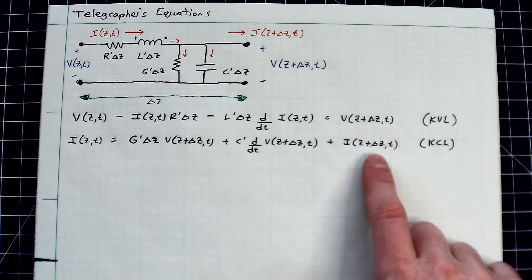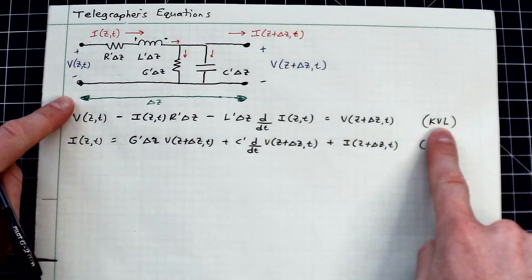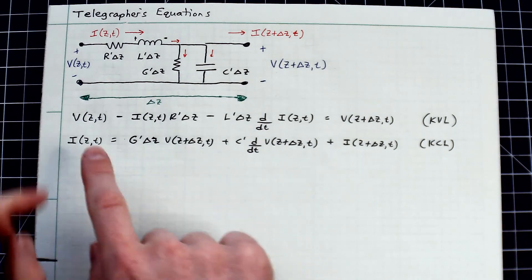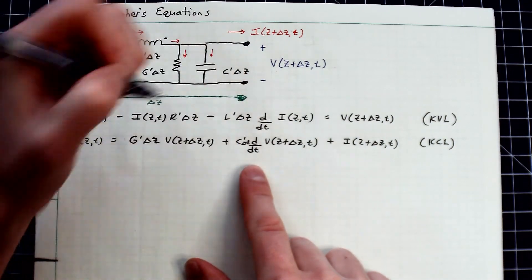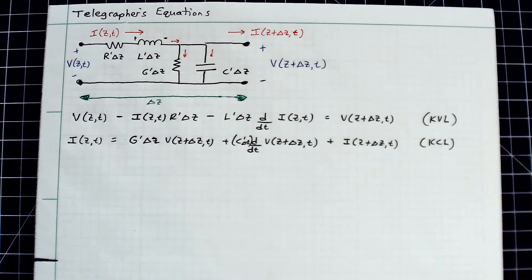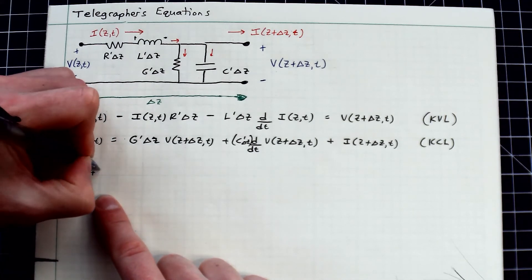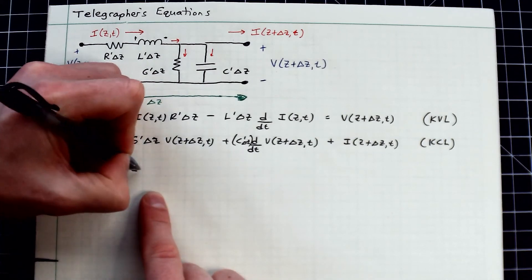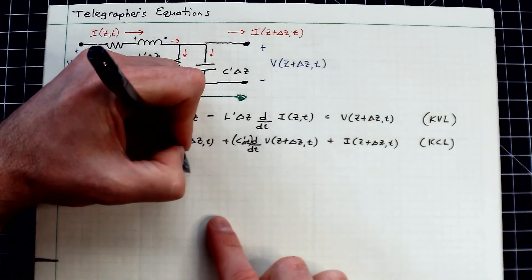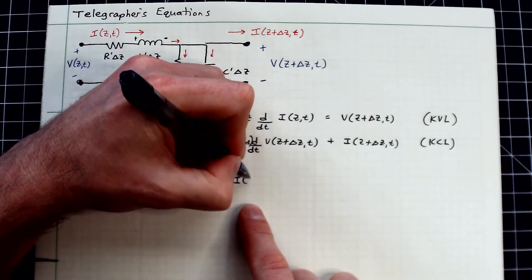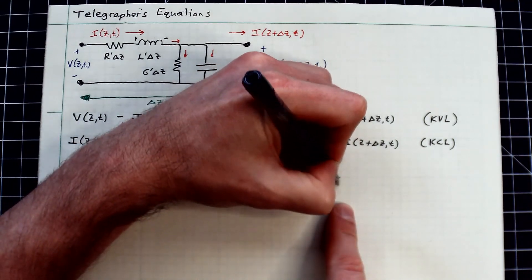Now we rearrange these two expressions to get finite difference expressions representing the change in voltage and current as a function of these parameters. Moving terms and dividing everything by delta-z gives us: [V(z + Δz, t) − V(z, t)] / Δz = −R-prime · I(z, t) − L-prime · ∂I(z, t)/∂t.